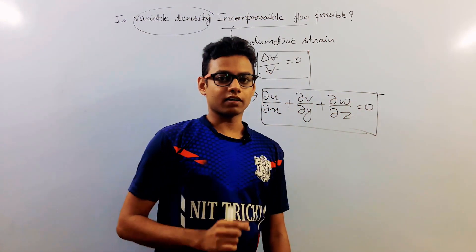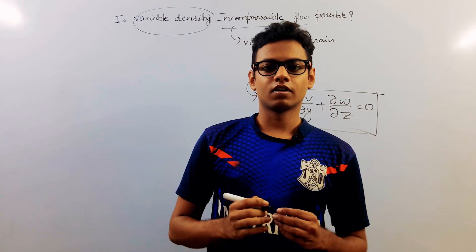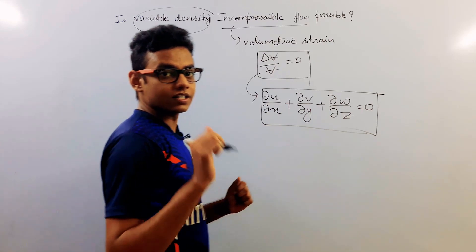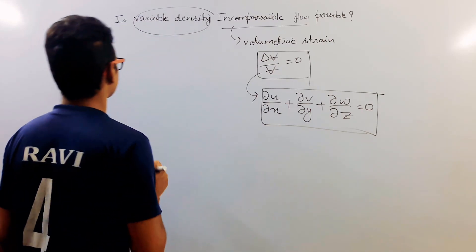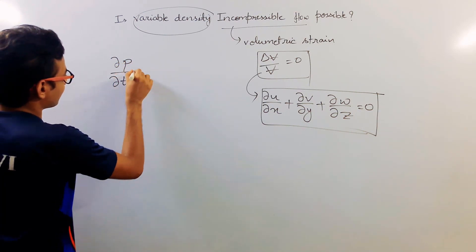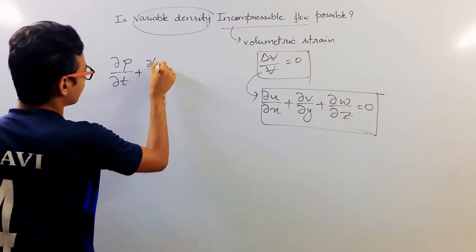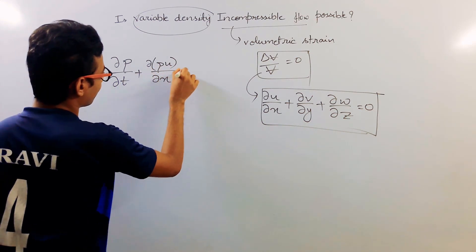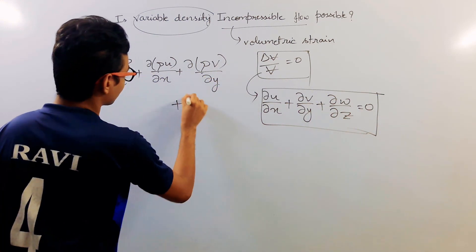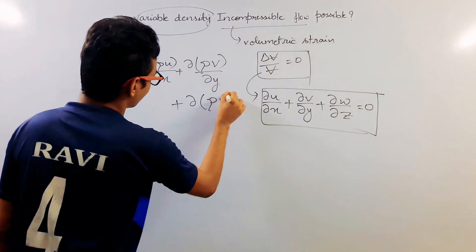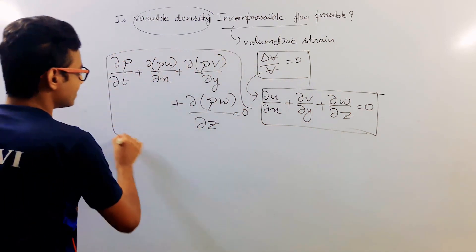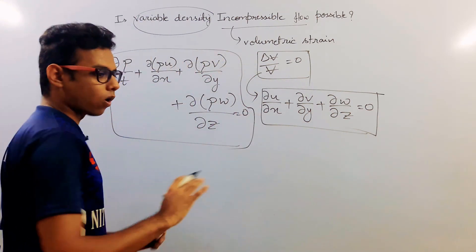Now, there is one important thing: for any kind of flow, the general continuity equation must be satisfied. The general continuity equation is del rho by del t plus del(rho·u) by del x plus del(rho·v) by del y plus del(rho·w) by del z, and that must be equal to zero. This needs to be satisfied for all kinds of flow.